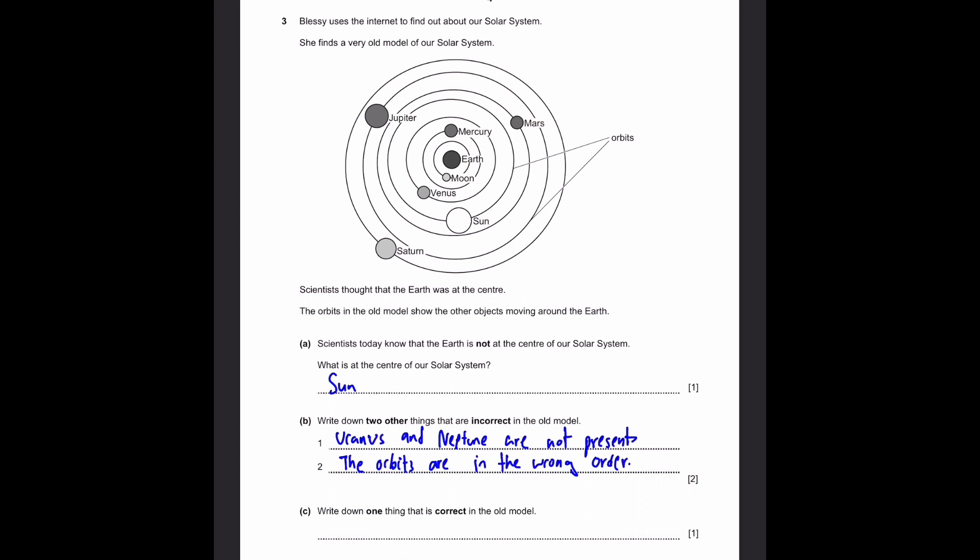Now C, write down one thing that's correct in the old model. Okay, let's see. What's all revolving around the earth? The moon, Mercury, Venus, Sun, Mars, Jupiter, Saturn. The moon is revolving around the earth, even in the current day. The time you're watching this, the moon is revolving around the earth. That means that the scientists had guessed correctly that the moon revolves around the earth. Probably the only thing correct in this model.